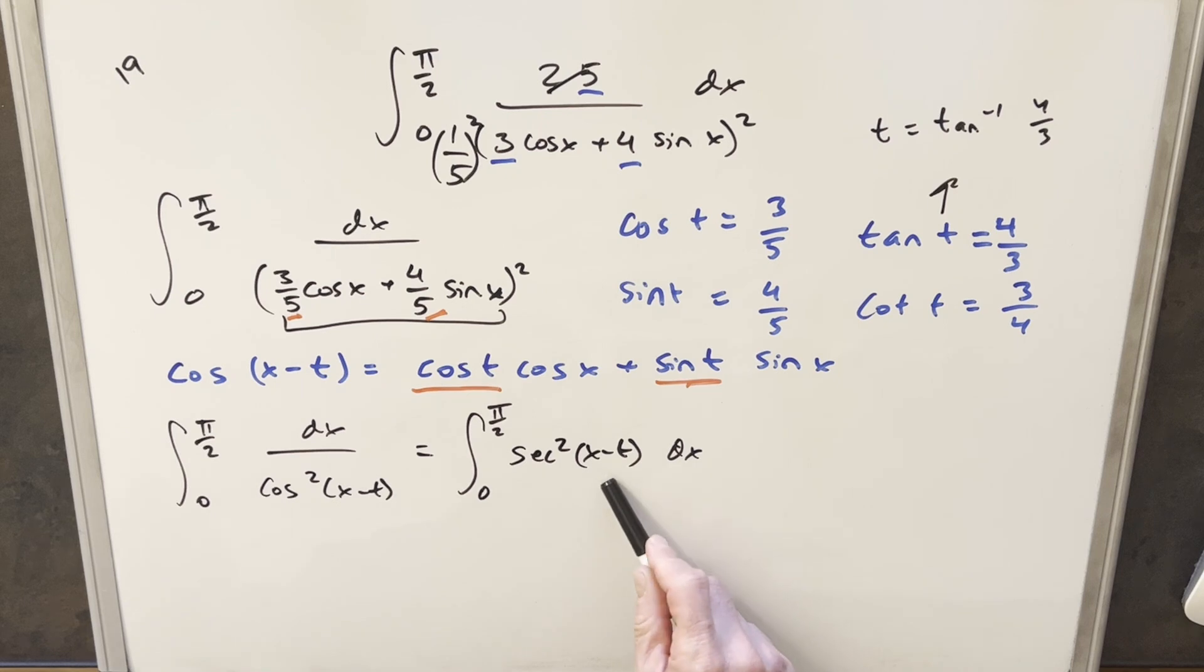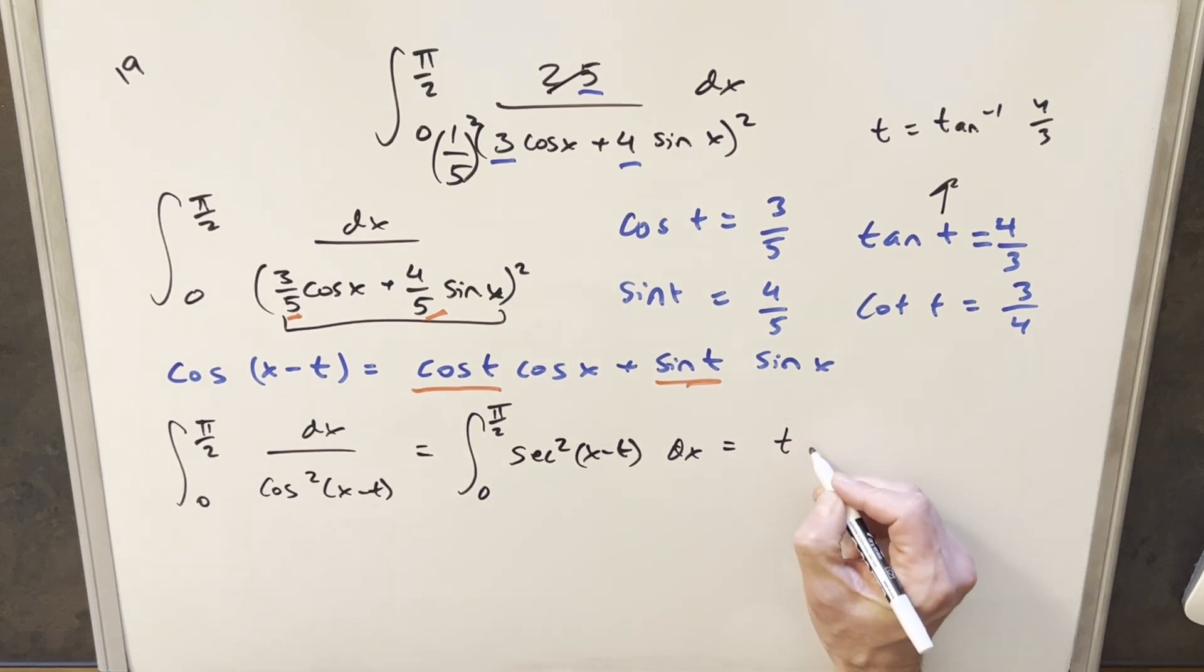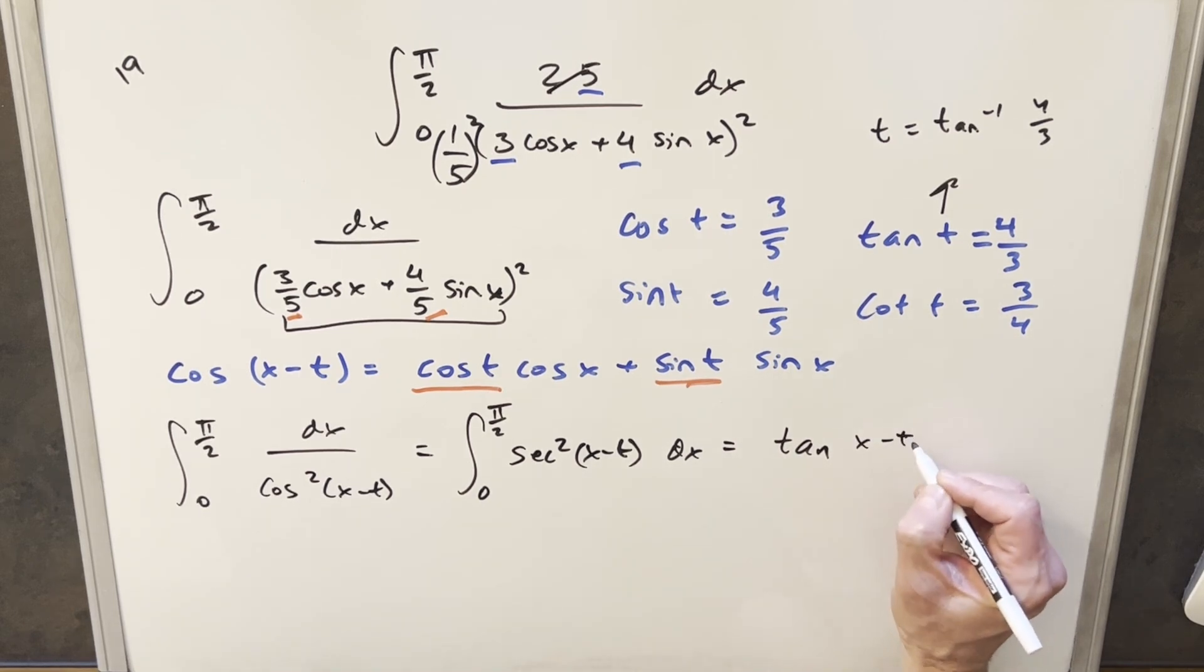And then before we integrate, you could do a substitution, but it's really not necessary because the derivative of x minus t is just dx, and the substitution is not really going to help us. So I'm just going to go ahead and integrate this, and it's going to become the integral of secant squared is just tangent x minus t, and we just need to evaluate from 0 to pi over 2.